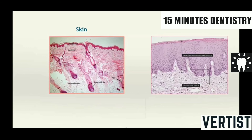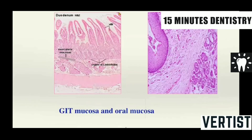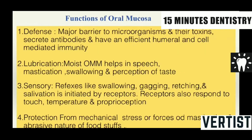Anatomically, it is located between the skin and the gastrointestinal tract. And the oral mucous membrane performs a lot of functions. The major barrier to microorganisms and their toxins is carried by this. They secrete antibodies and have an efficient humoral and cell-mediated immunity.